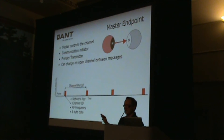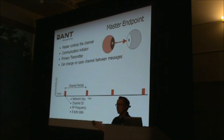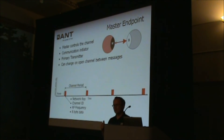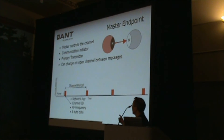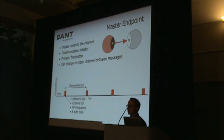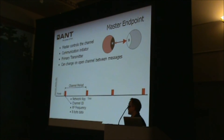Each of these parameters can actually be changed on a per-packet basis. For example, RF frequency can be varied message-by-message to implement frequency agility — an algorithm that changes the frequency each message period. That's the basis of our frequency agility mechanism implemented on the AP2 and available as a reference design. Within ANT+, though, we define single-frequency systems where each sensor transmits at one particular RF frequency.